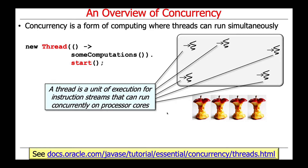In Java, you get a thread by saying new thread, giving it some computation — which could be a lambda expression, a runnable, or similar — and then you start that thread. That's basically how you get things up and running with Java threads. As you can see, there are multiple threads running in a process, and they can run on top of multiple cores.